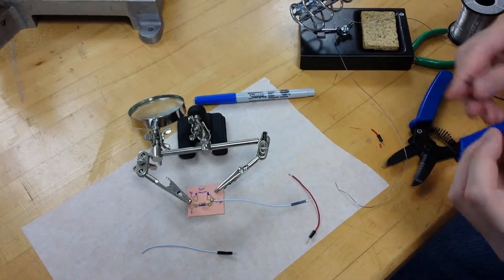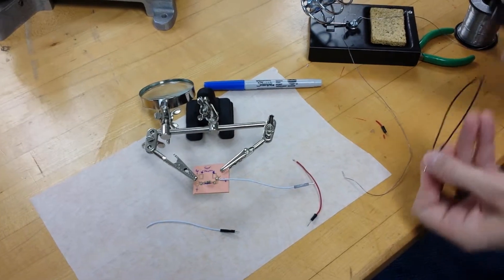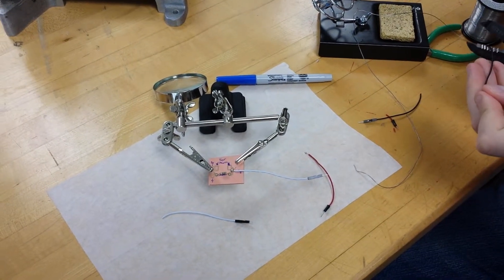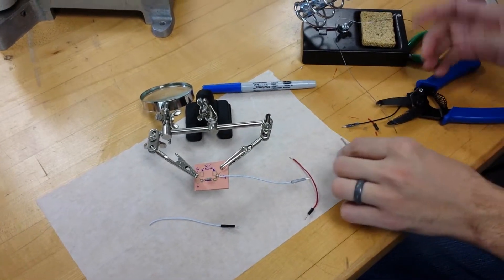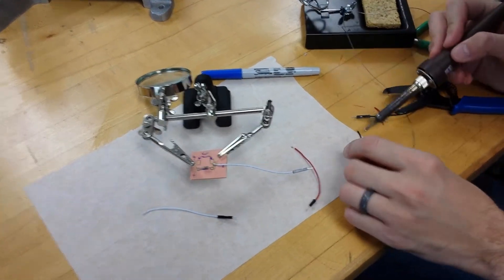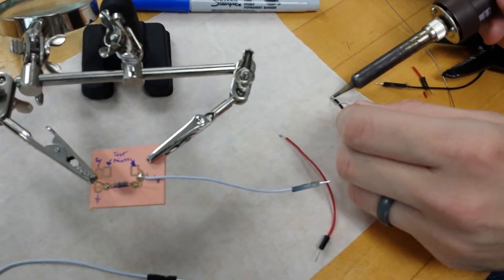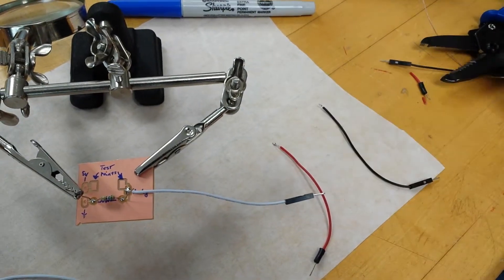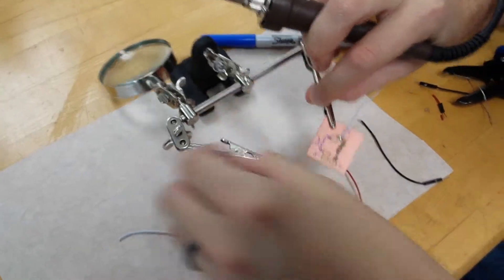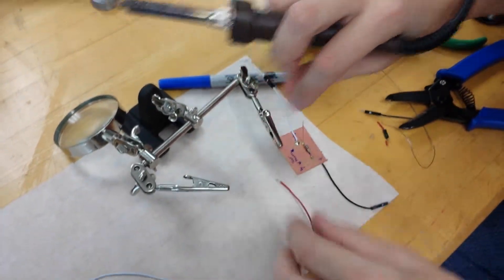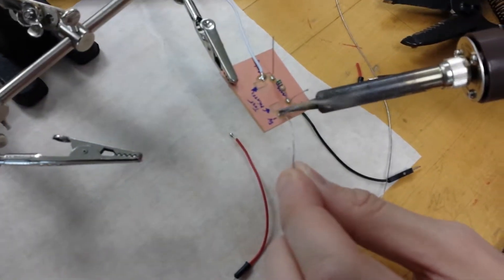I'll do the same with the black here. I'm going to tin that. And now I'm going to rotate my circuit around.